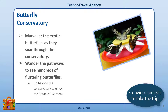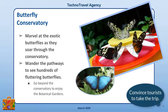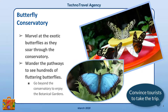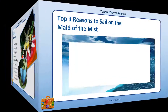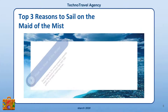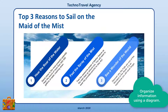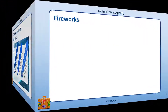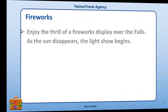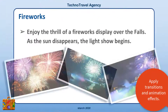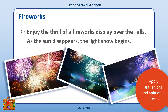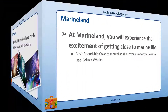Using persuasive language, they will convince tourists to take the trip. A diagram feature will be used to organize information about one of the activities. Students will learn how to apply animation and transition effects to control the flow of information.